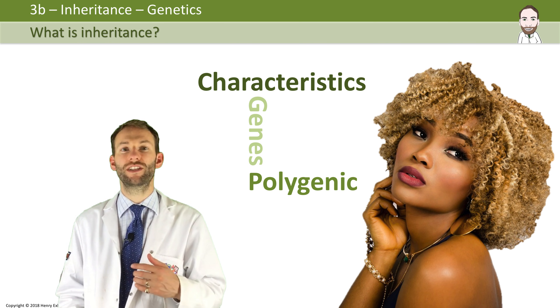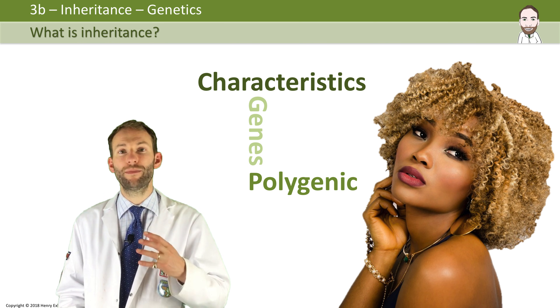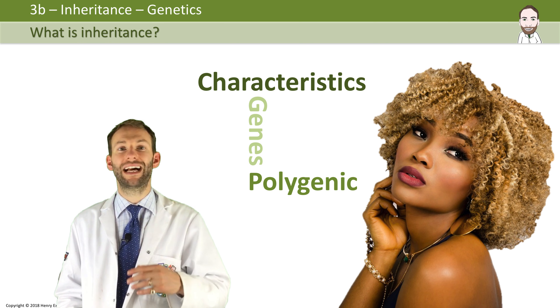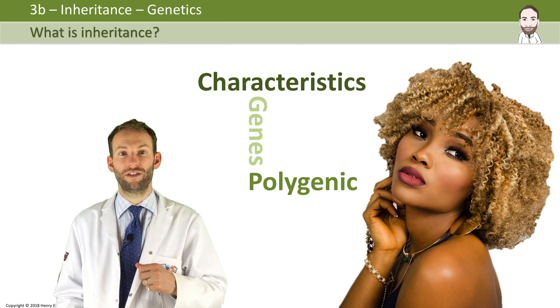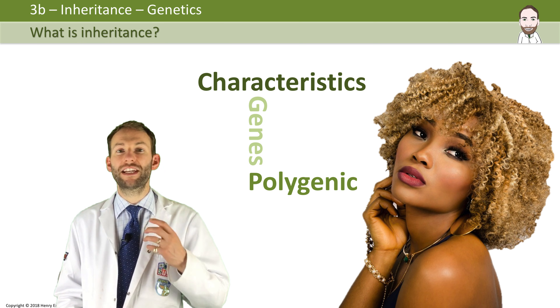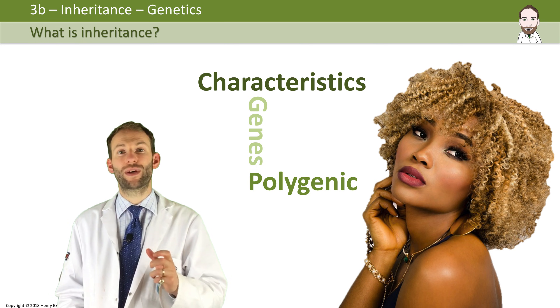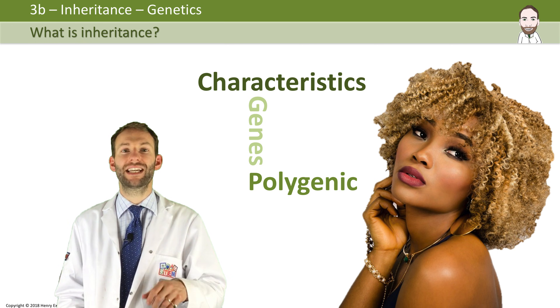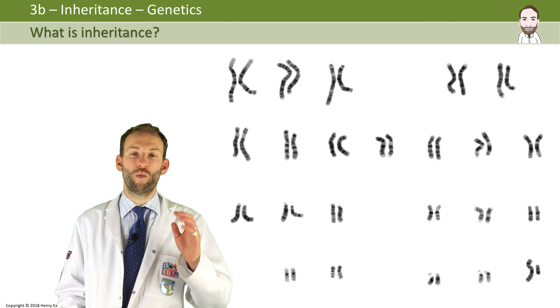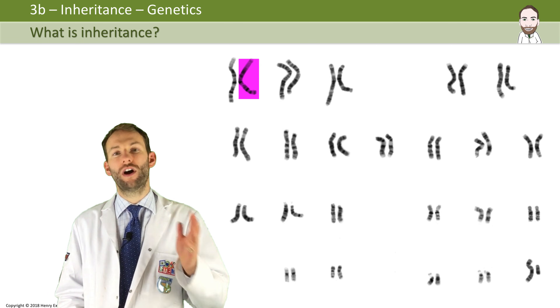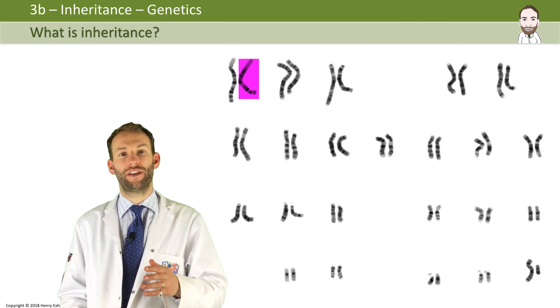As already mentioned in this course, your typical human cell has 46 chromosomes in the nucleus, and they can be arranged into 23 pairs, as shown in this diagram here — one from your mother and one from your father.